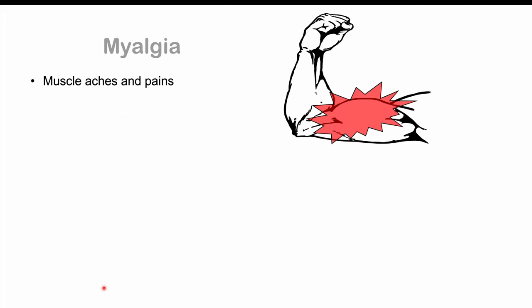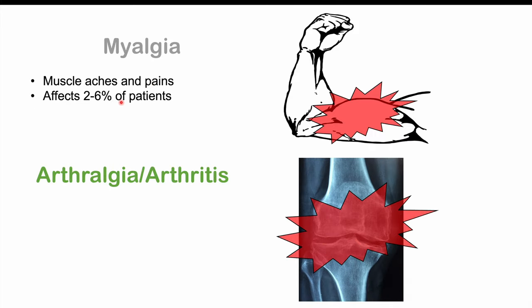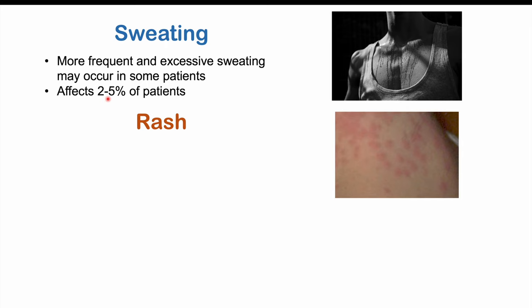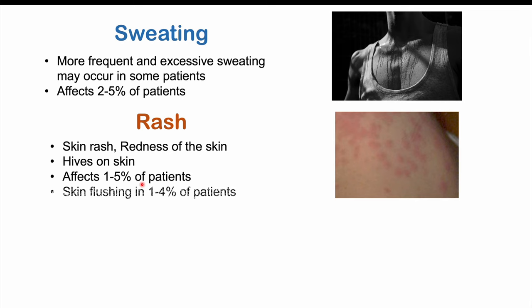Myalgias — muscle aches and pains — affect two to six percent of patients. Arthralgia and arthritis — joint aches and pains — affect one to four percent of patients. Some patients can also experience issues with sweating, with more frequent and excessive sweating occurring in two to five percent of patients. Some patients can experience a skin rash or skin redness, and some patients can have hives on the skin, affecting one to five percent of patients.